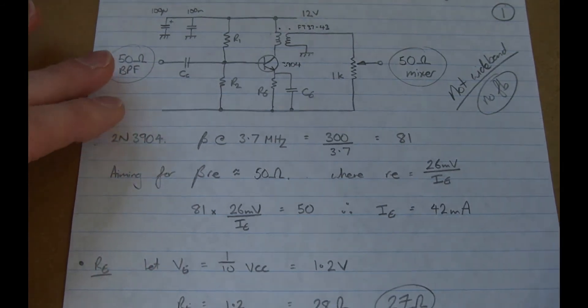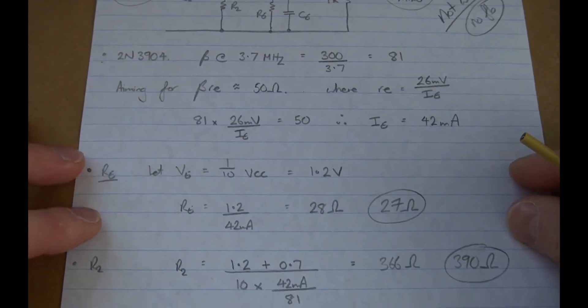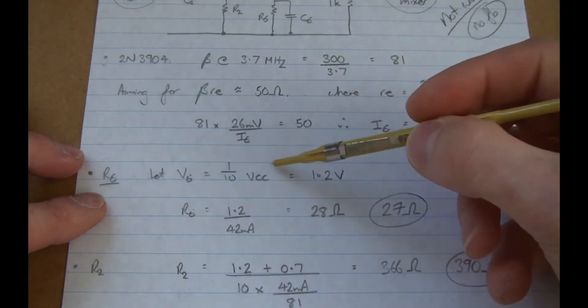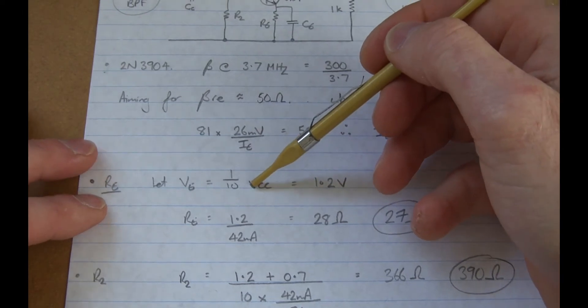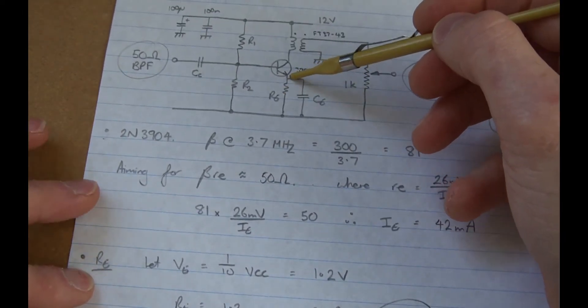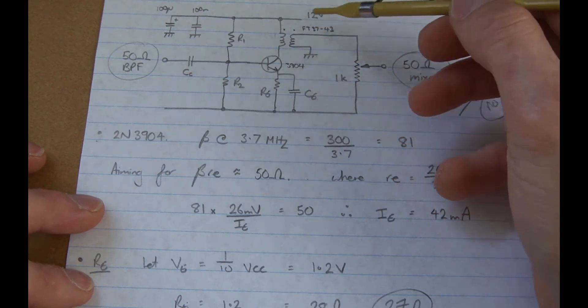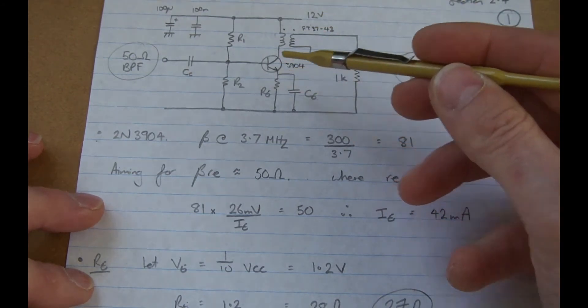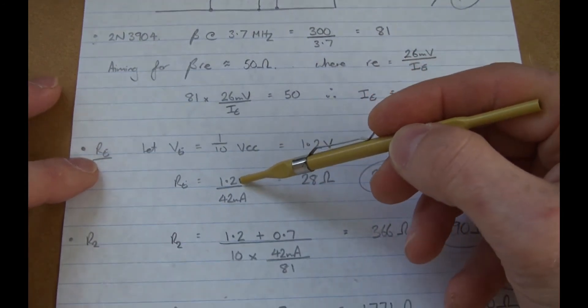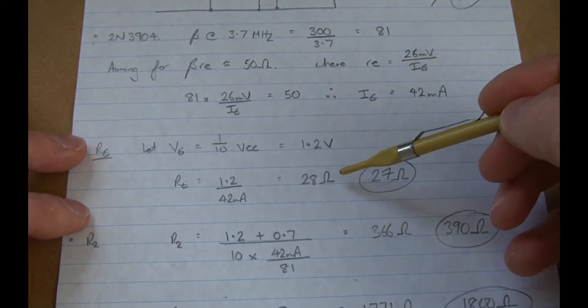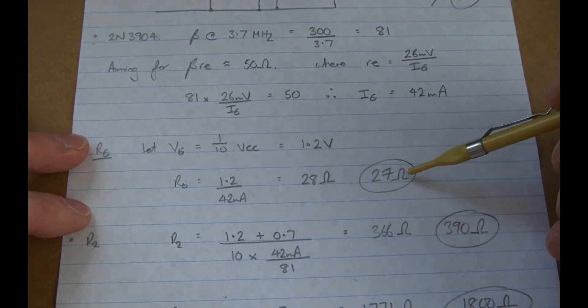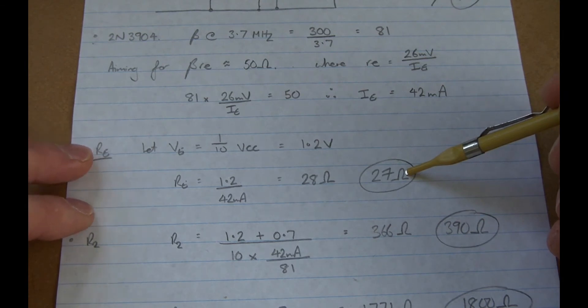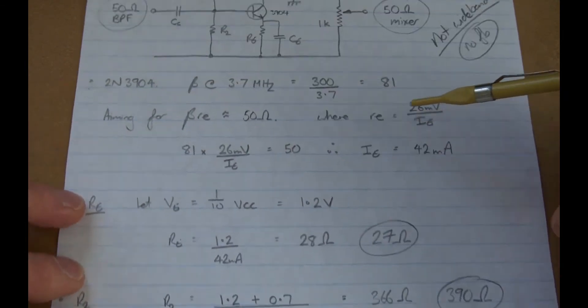So now I can start to work out the various values. For RE, once again, I'm going to make the voltage at the emitter equal one tenth of VCC. VCC is 12 volts, so here I'll make that 1.2 volts. So 1.2 volts divided by 42 milliamps equals 28 ohms, so I'll use 27 ohms, which is the nearest standard value.